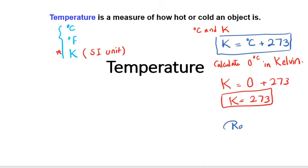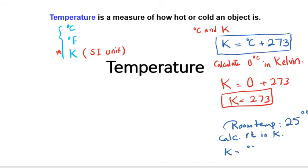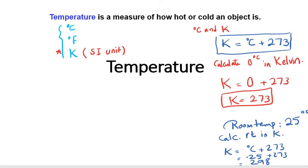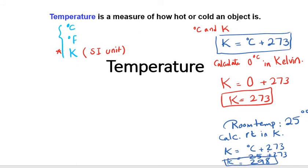One temperature you need to memorize is room temperature, which is 25 degrees Celsius. If you are asked to calculate room temperature in Kelvin, you use K = °C + 273, so 25 + 273 = 298 K. So 298 K is room temperature.